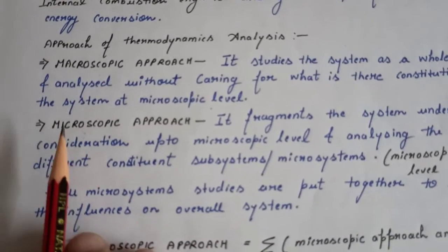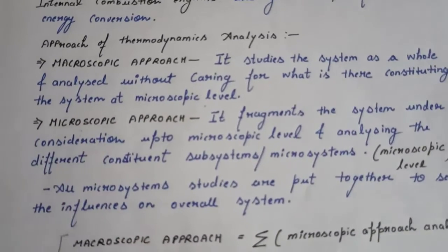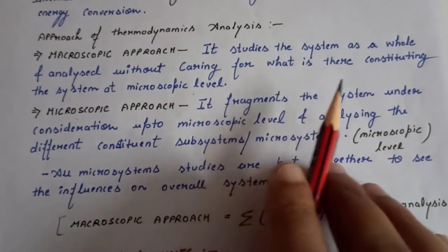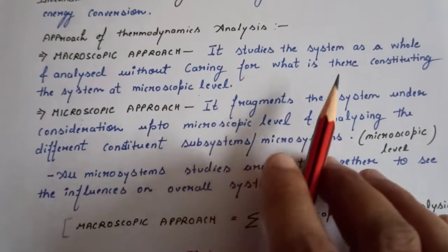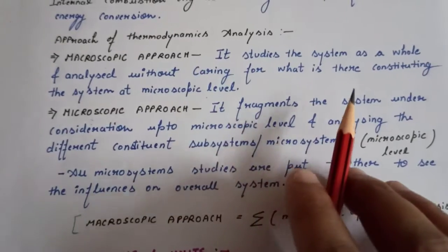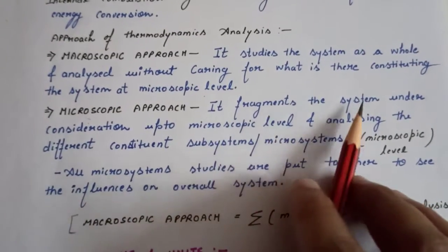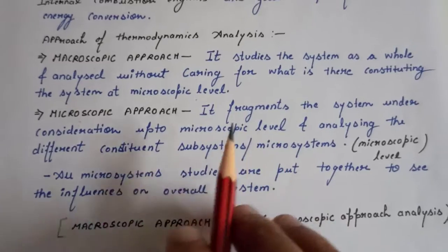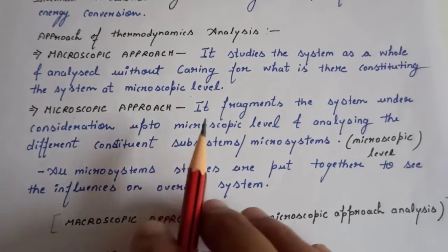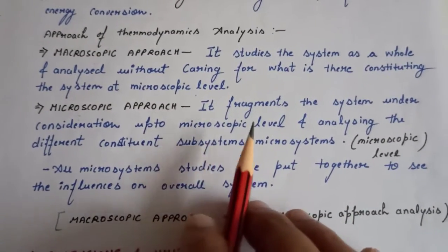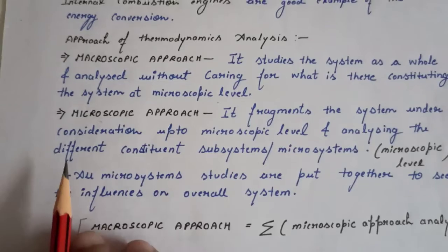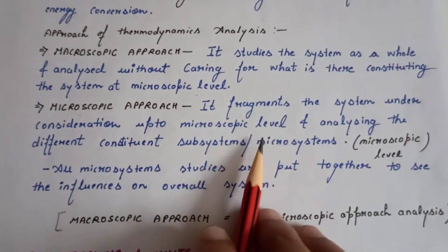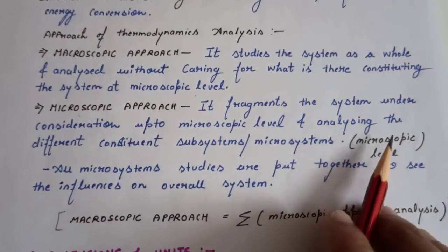The second kind of approach is the microscopic approach. This approach fragments the system under consideration up to the microscopic level, analyzing the different constituent subsystems or microscopic systems at the microscopic level.